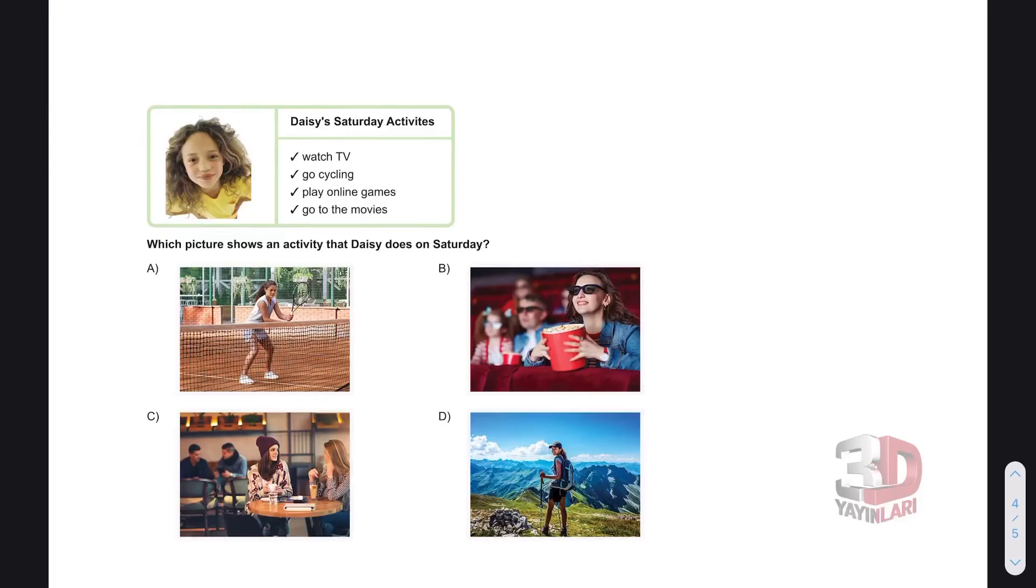Let's start by reading the question. Which picture shows an activity that Daisy does on Saturday? Daisy'nin cumartesi günü yaptığı bir etkinliği hangi resim gösterir? She watches TV, televizyon izler. Goes cycling, bisiklet sürer. Play online games, bilgisayar oyunu oynar. And go to the movies, sinemaya gider. Teniste alakalı bir şey yok. She doesn't play tennis. She does not go to the cafe. She does not go trekking. But she does go to the movies. Cevap B şıkkı.